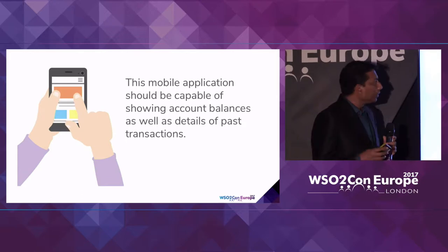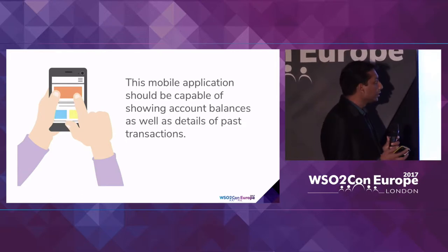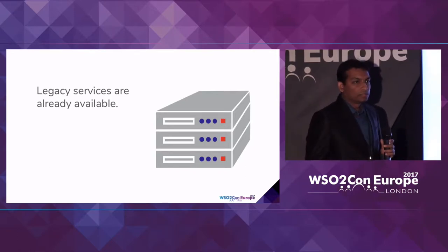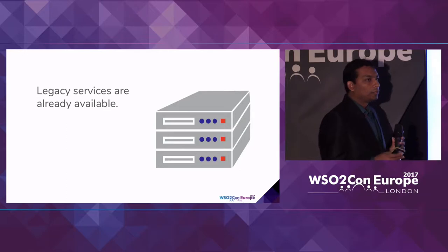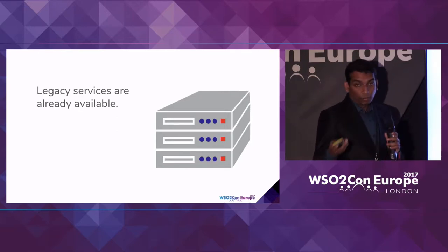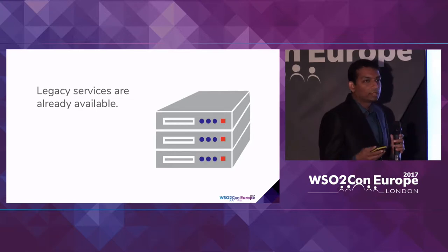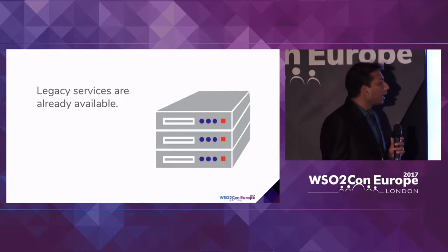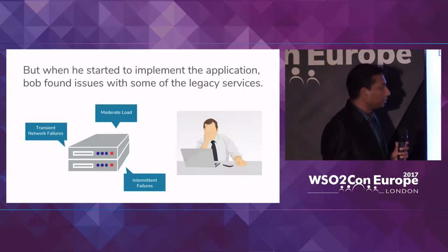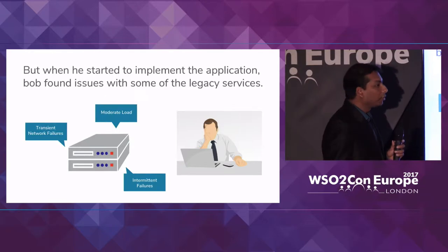This banking application should be capable of showing the recent transaction details as well as the account balances. The bank already has some services which provide this functionality, but those services are not exposed to the outside — they are for internal operations. So to develop a mobile application using those services, it's just a matter of exposing them as APIs and consuming them. It looks like a very simple task, but Bob found some issues.